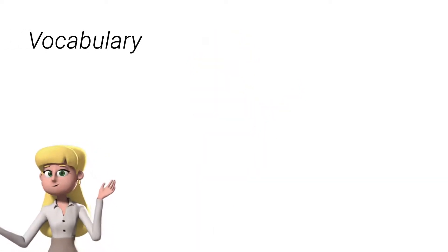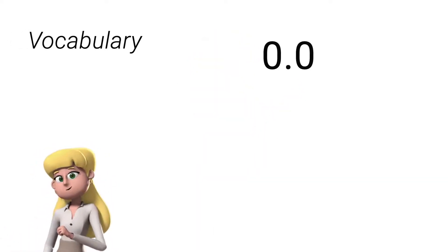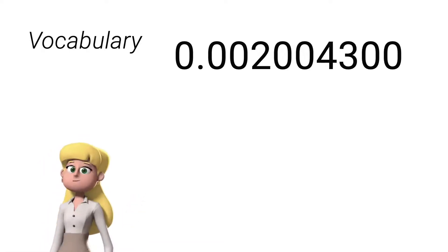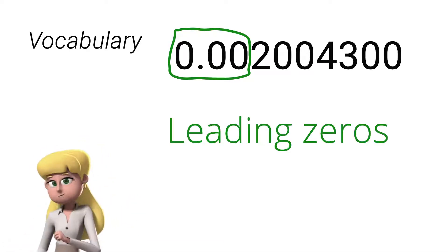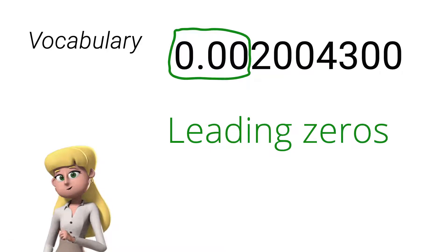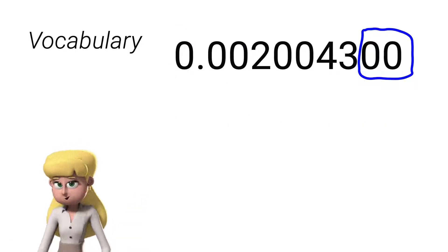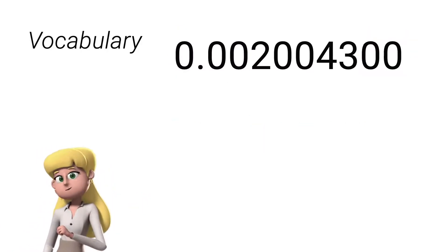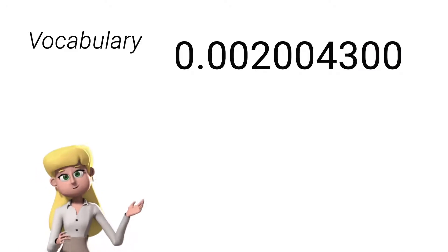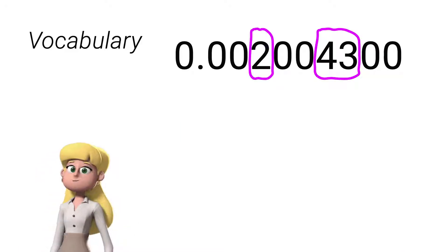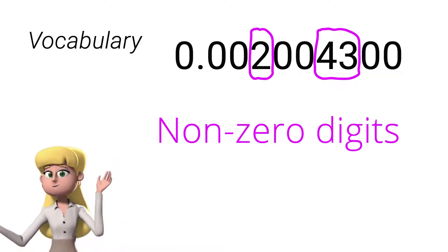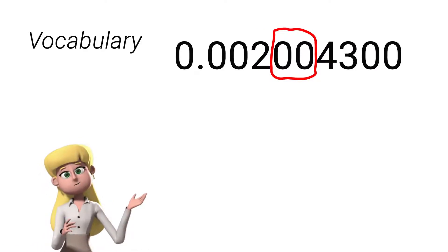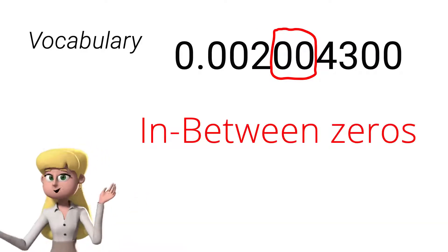If I have this value, 0.002004300 — these zeros here are called leading zeros, while the zeros located in its tail are what we call trailing zeros. And of course, digits 2, 4, and 3 are non-zero digits, and zeros sandwiched by two non-zero digits are called in-between zeros.